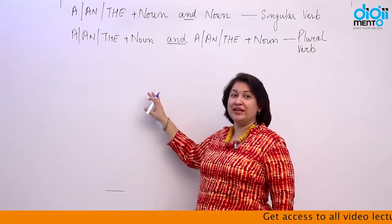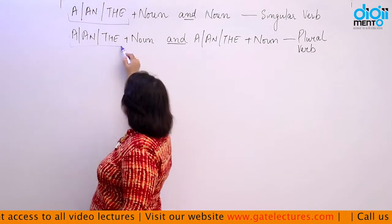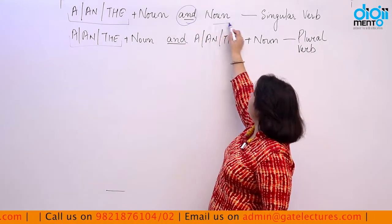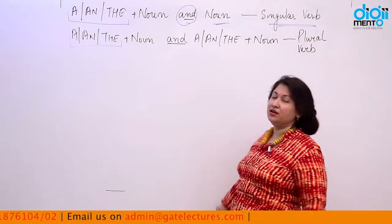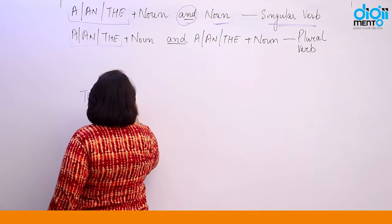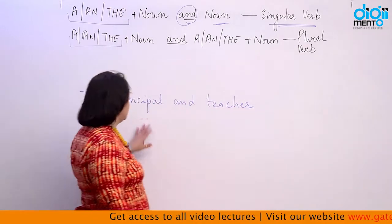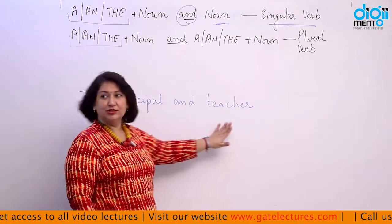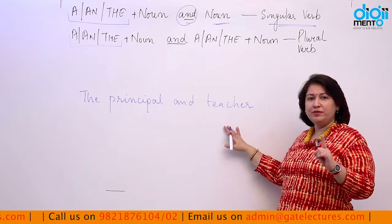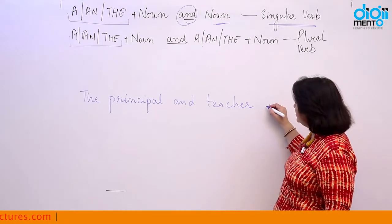The next rule is about determiners 'a' and 'the'. When we use the determiner 'the' with a noun, then use 'and' as a conjunction, and then another noun without a determiner, the verb is always singular. For example: 'the principal and teacher' — here we have one person who is both a principal and a teacher, so the verb must be singular.